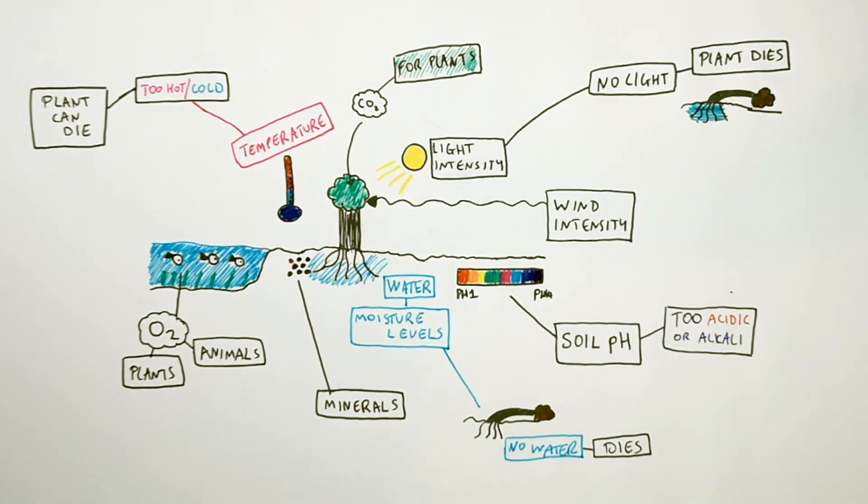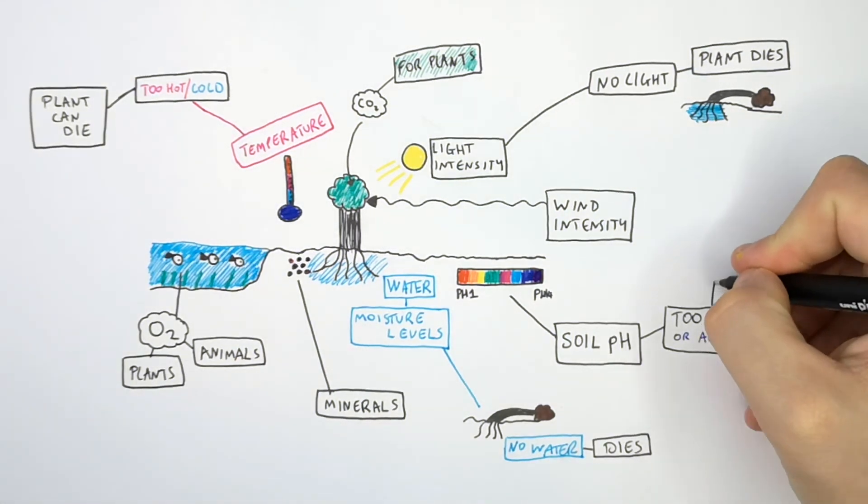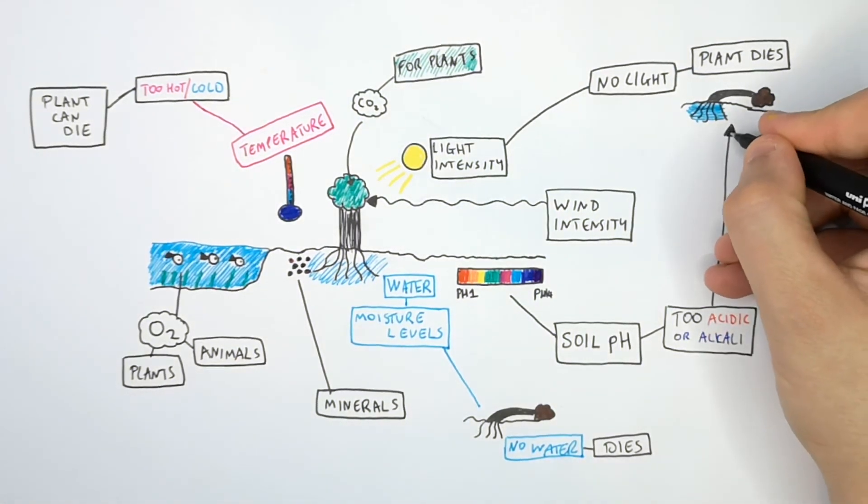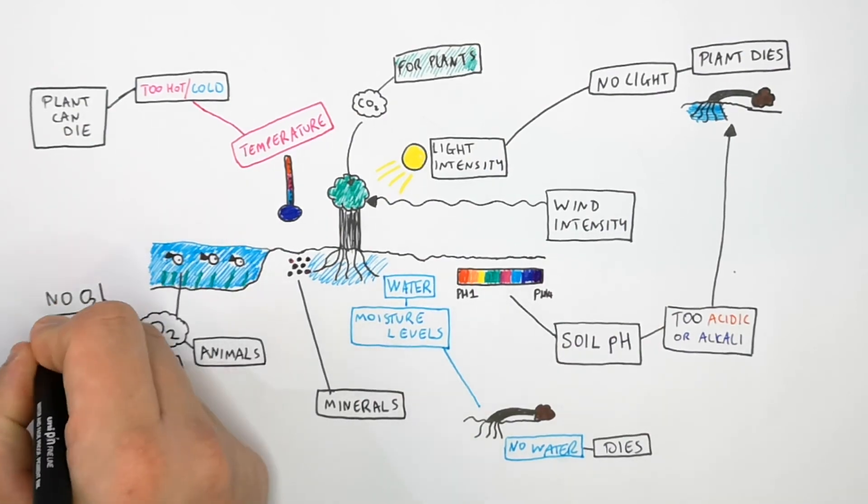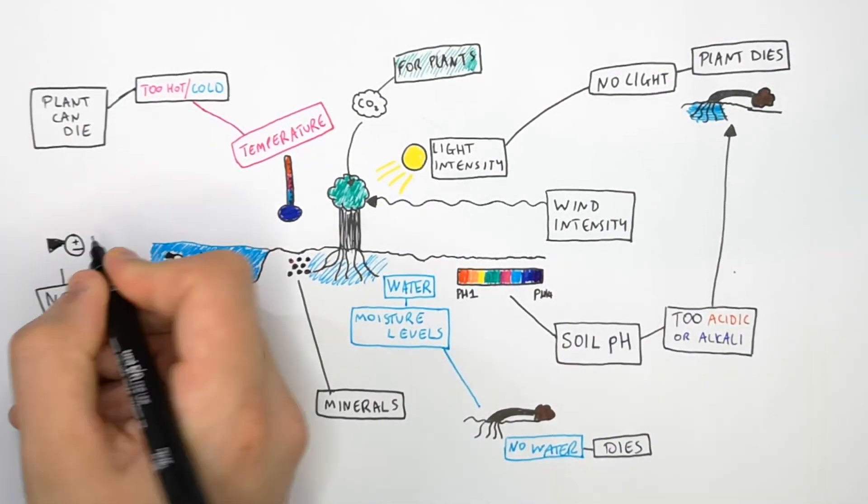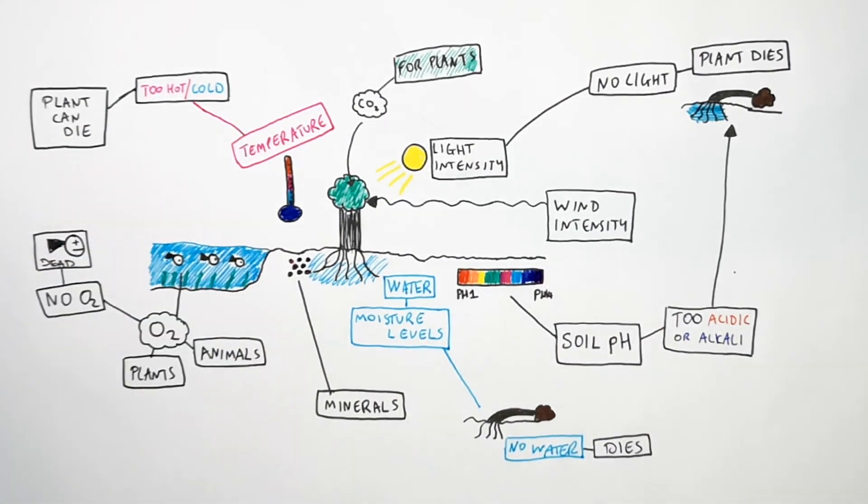If the soil pH is too acidic or alkali, the plant can also die or it can maybe struggle with its growth. If there is not enough oxygen for a living organism, that living organism will die. So these are how abiotic factors affect living organisms in an ecosystem.